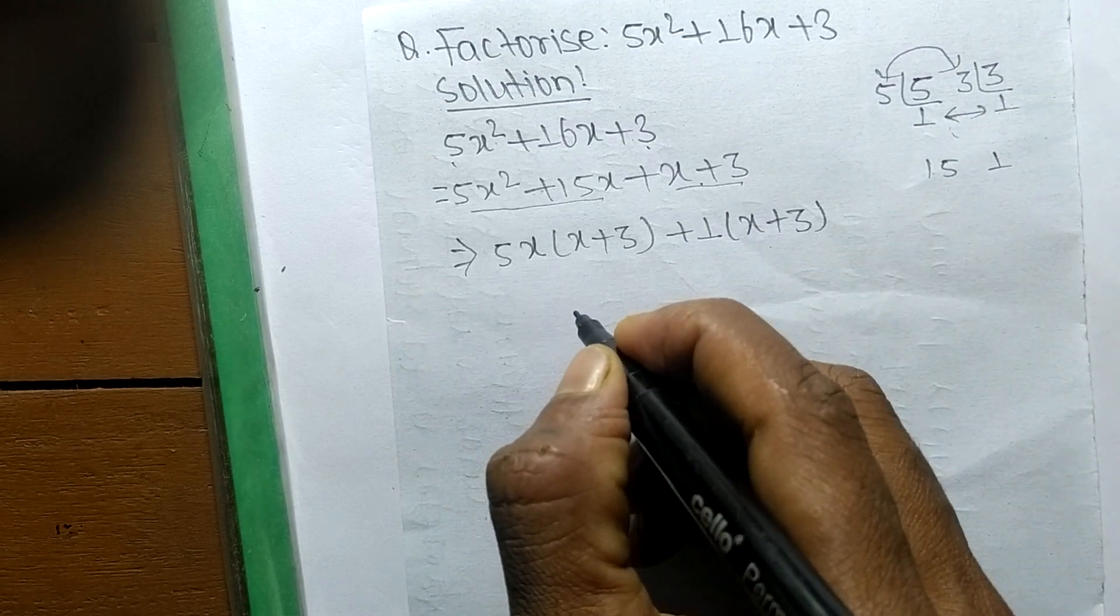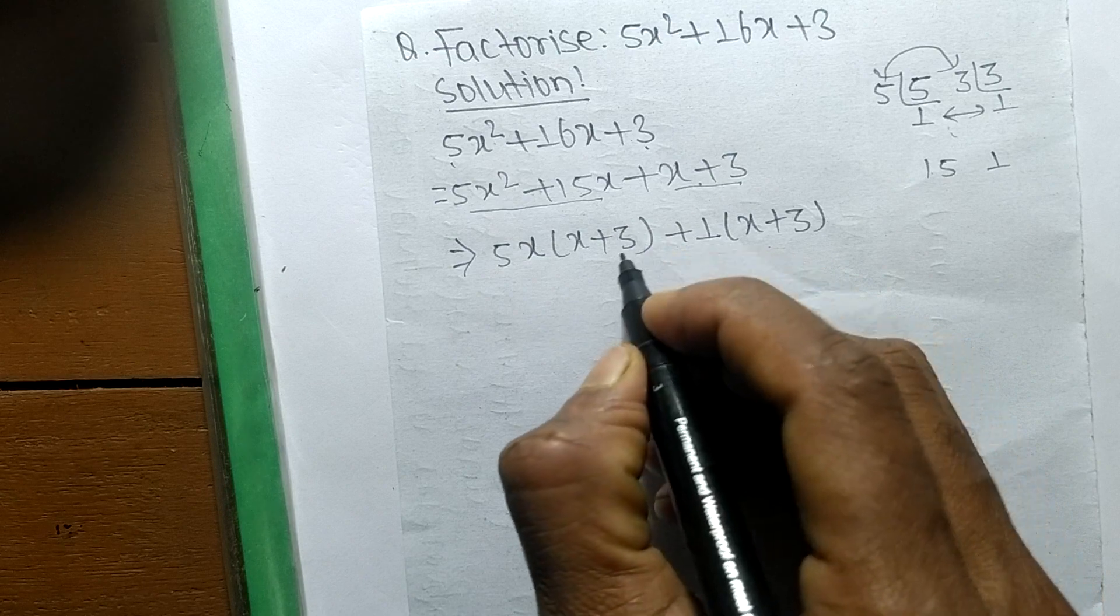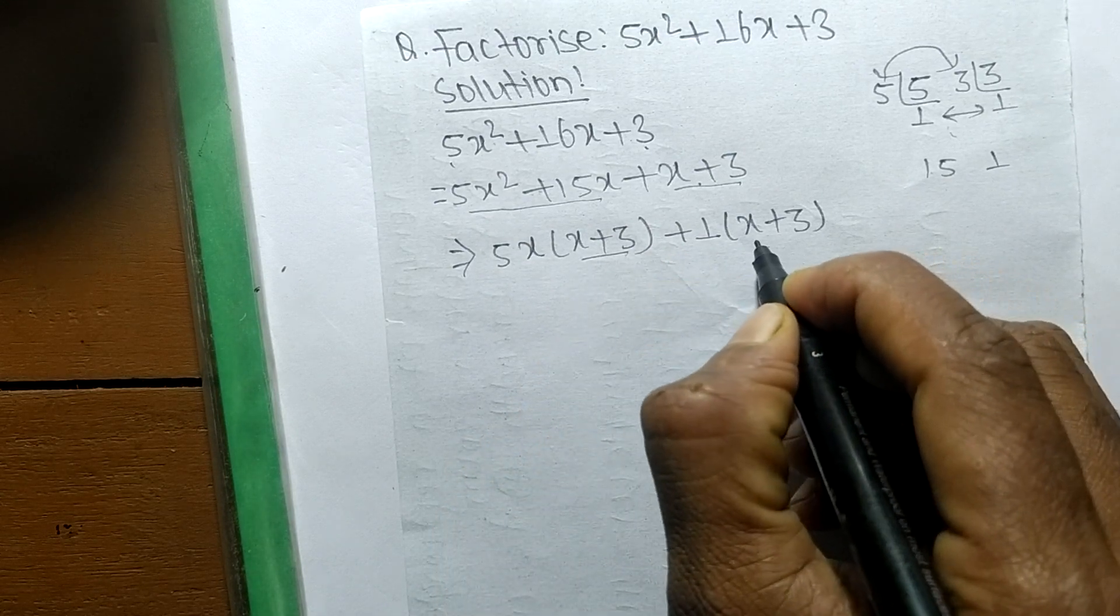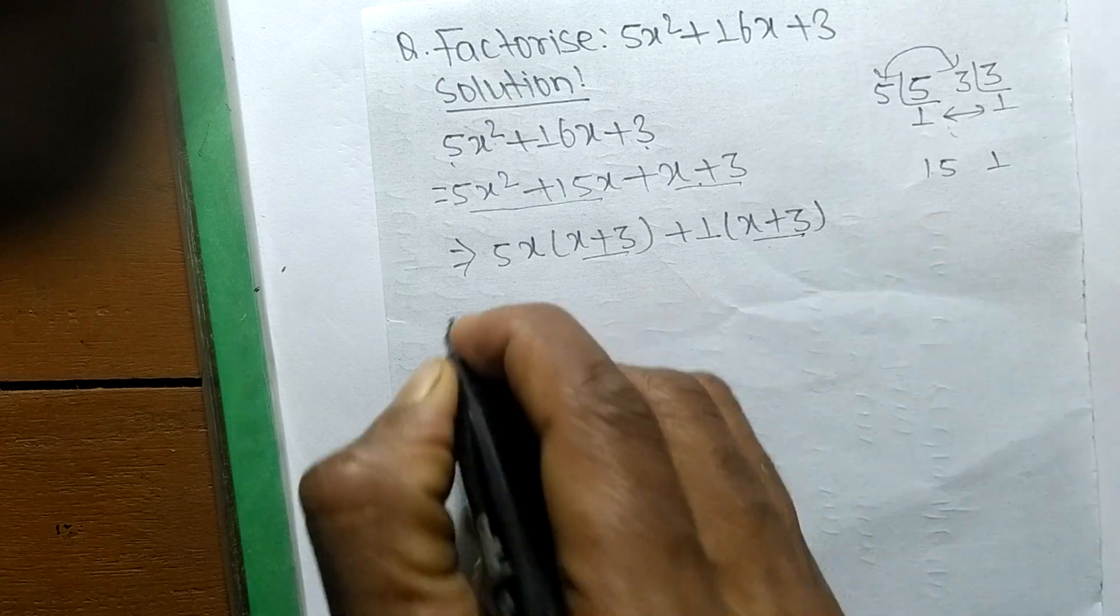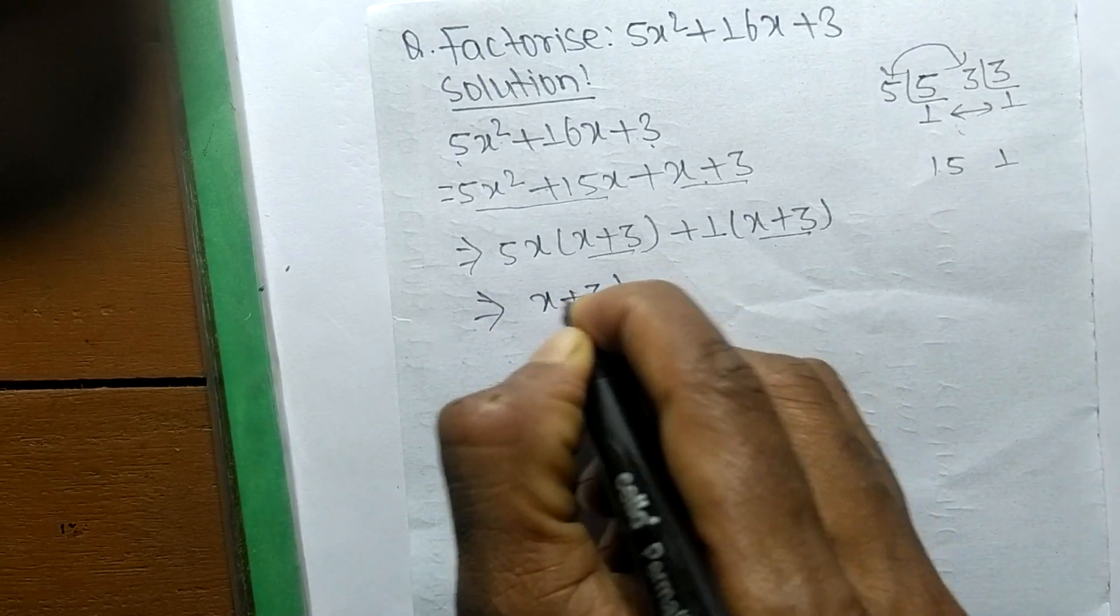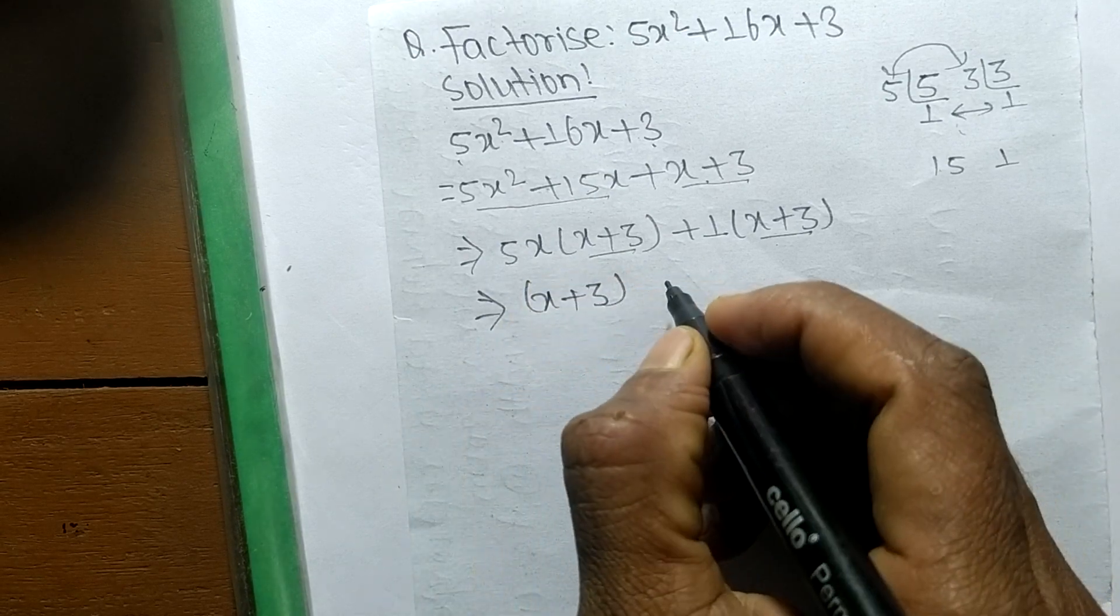As you look closely, in the first part there is x + 3, and in the second there is also x + 3. So we can take x + 3 as common.